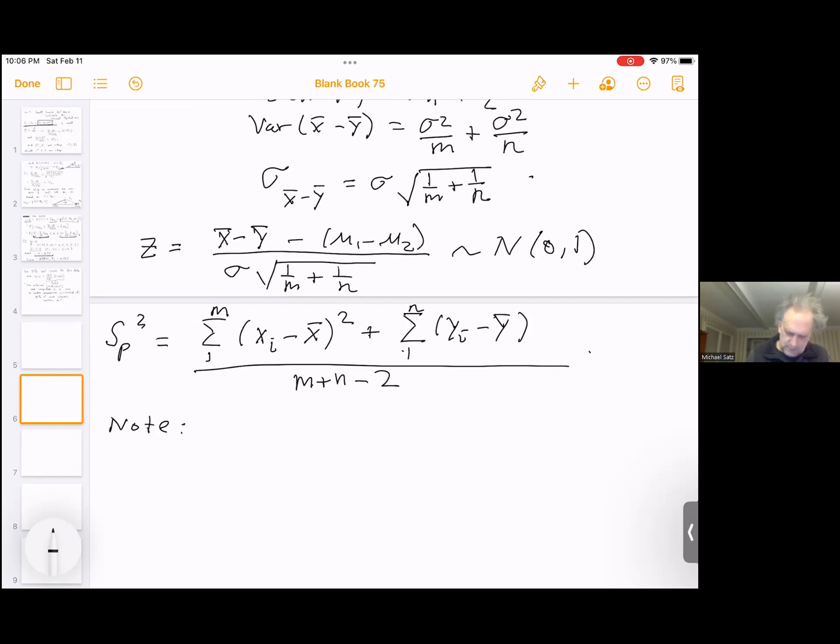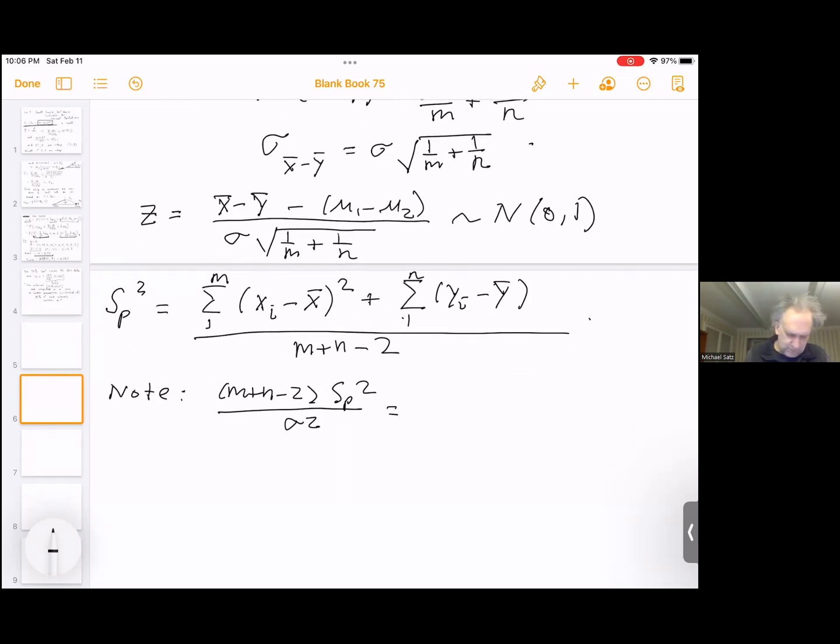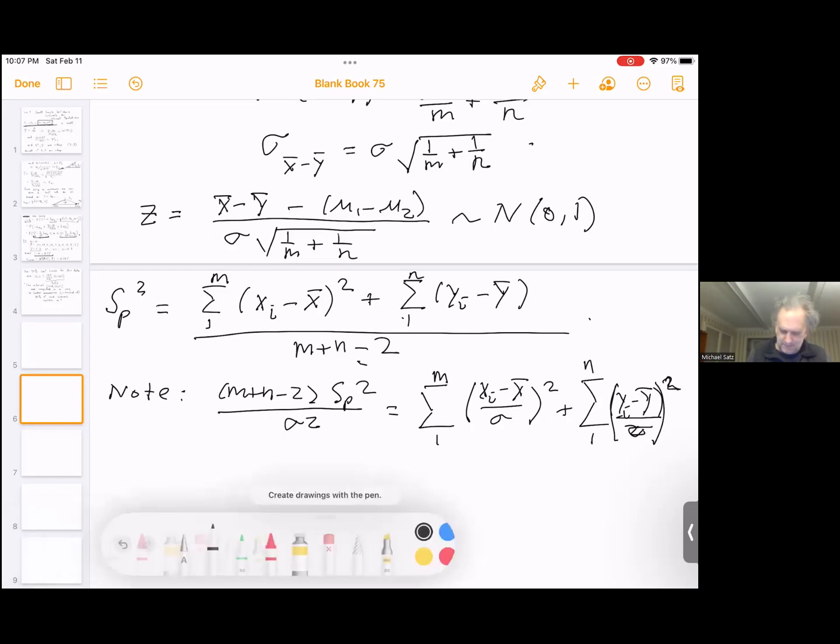Note, if I take m plus n minus 2 times this sp squared and divide by the true variance, which I'm assuming is the same, then what do we get? We get the sum. This cancels here, and I divide by sigma squared, which I can bring in each term here. So I have n plus m terms. I'm going to separate this. So 1 to m, xi minus x bar over sigma squared plus 1 to n, yi minus y bar over sigma squared.